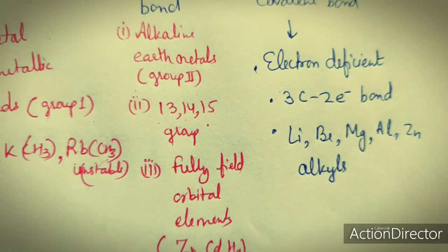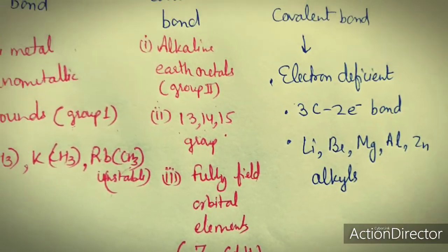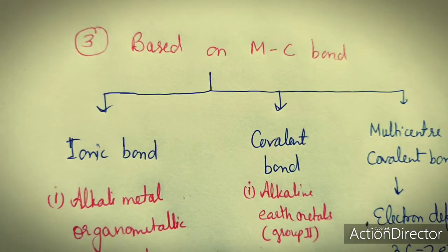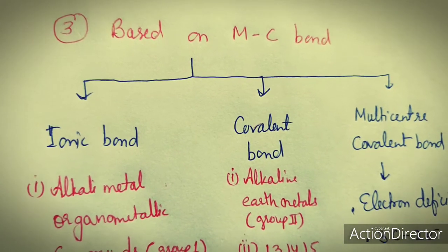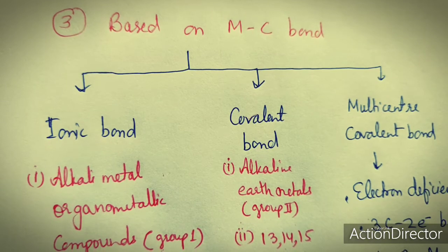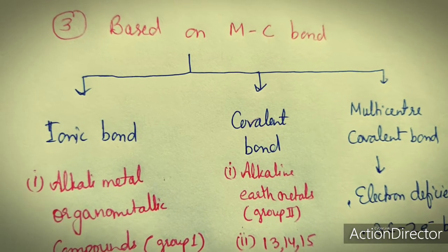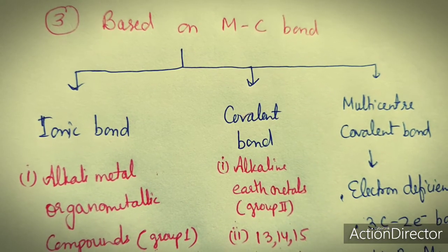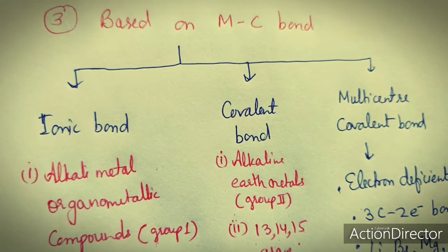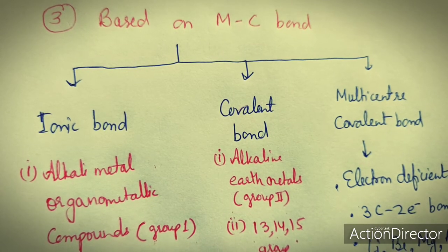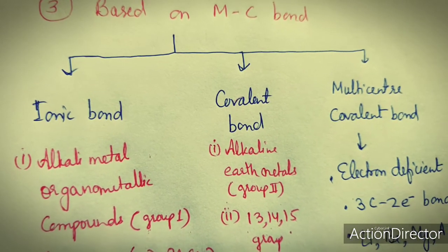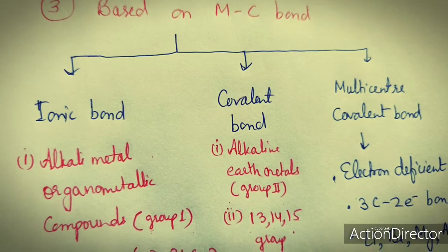In conclusion, organometallic compounds can be classified on the basis of metal type, ligand type and hapticity, and the nature of the metal-carbon bond. Based on this bonding, the stability and reactivity of organometallic compounds can be defined.